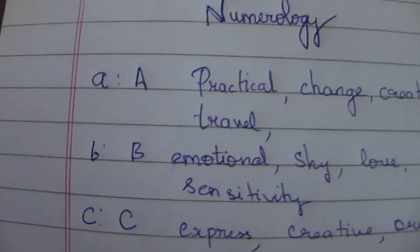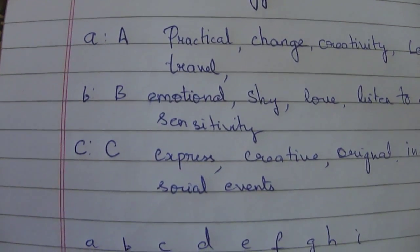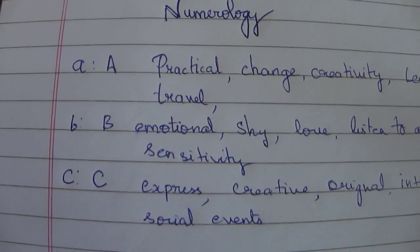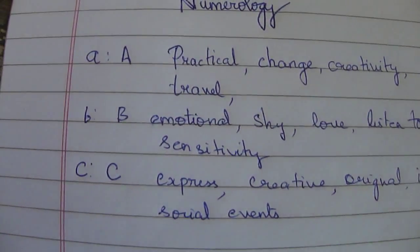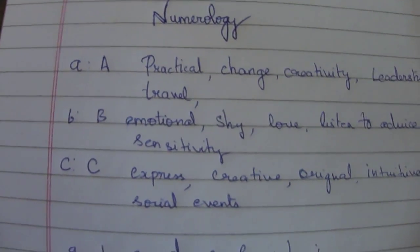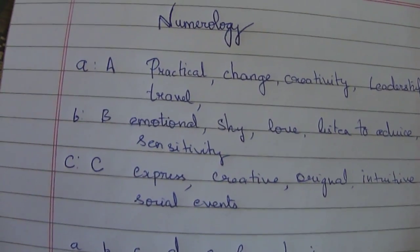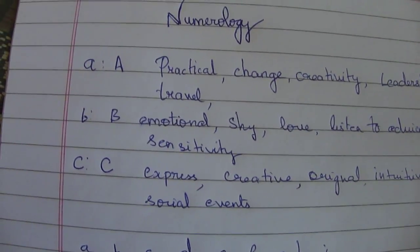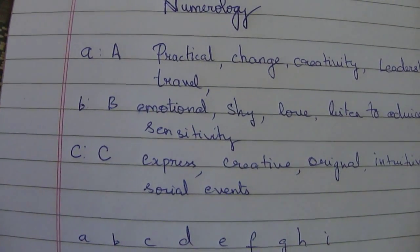Now let us understand the qualities of the letters A, B and C. The letter A is a more practical letter and it also indicates towards creativity and change. Talking about change, it does indicate towards travel, and this letter also has some bossier instincts and is somewhat like Jupiter, hence it also has the leadership quality.